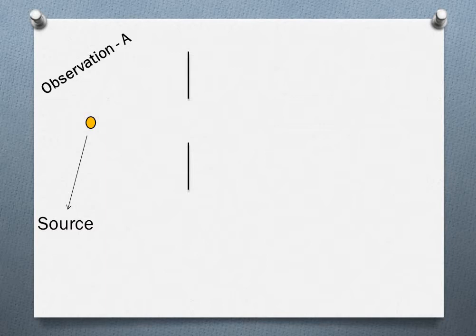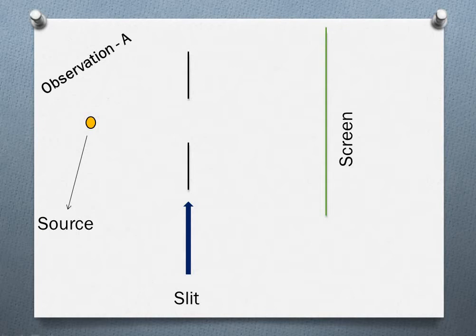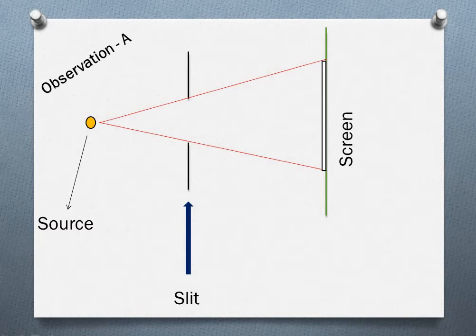We will start with just a simple observation. Let's call it Observation A. Suppose we have a light source and we place a slit in front of it. A slit is nothing but a small opening, with opaque space on either side. Now let's place a screen in front of it. Light moves in a straight line and we will have an image here, and all other places are dark space.